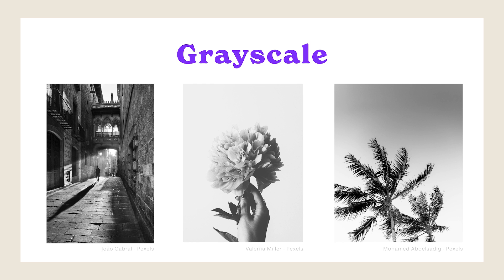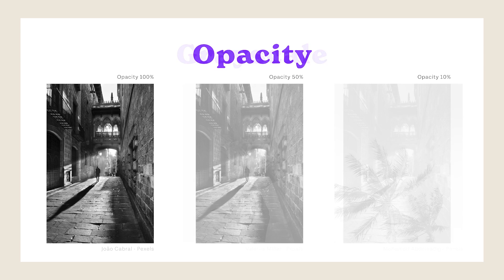Grayscale is a monochromatic palette consisting of various shades of gray, often used to create a minimalist and sophisticated look. In grayscale, an image is composed of shades ranging from pure white to pure black. Using grayscale can effectively simplify an image and focus on its composition, textures, and shapes without the distraction of color. It can also evoke a sense of nostalgia or add a timeless quality to a design. Moving on to opacity — opacity refers to the level of transparency or the degree to which an element allows light to pass through it.